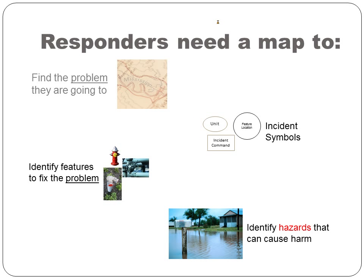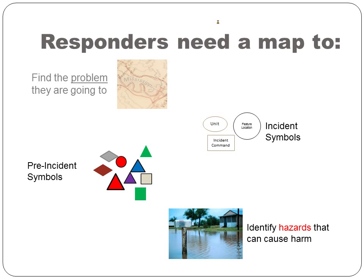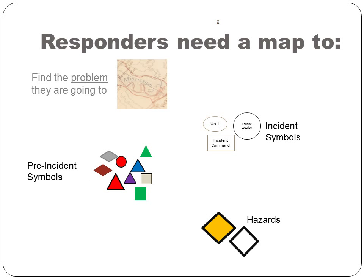To support these functions, the workgroup came up with three categories: Emergency Incident Symbols, Pre-Incident Symbols, and Hazard Symbols.